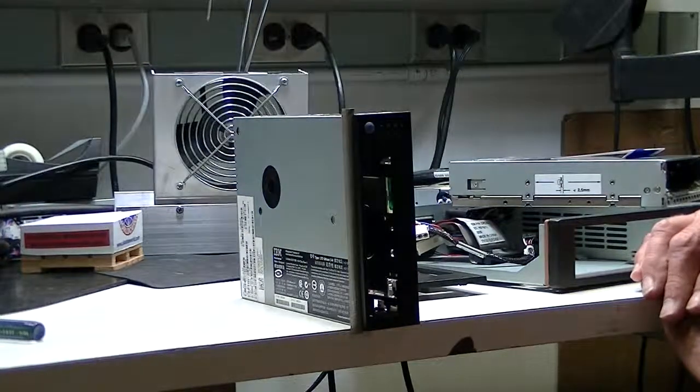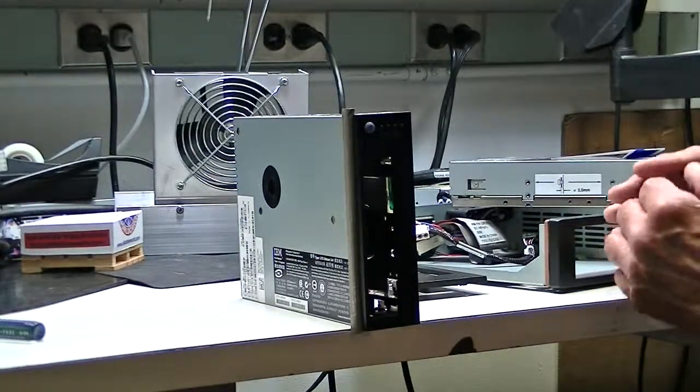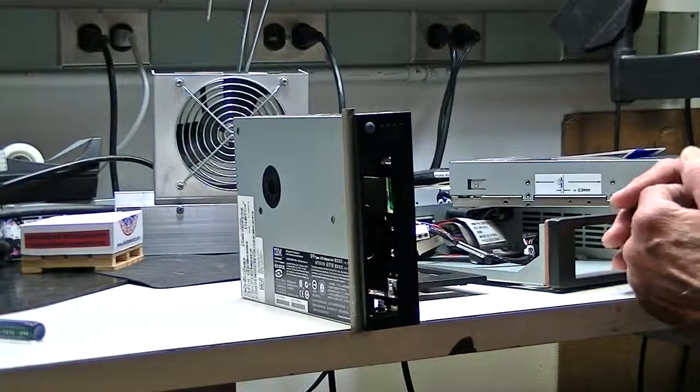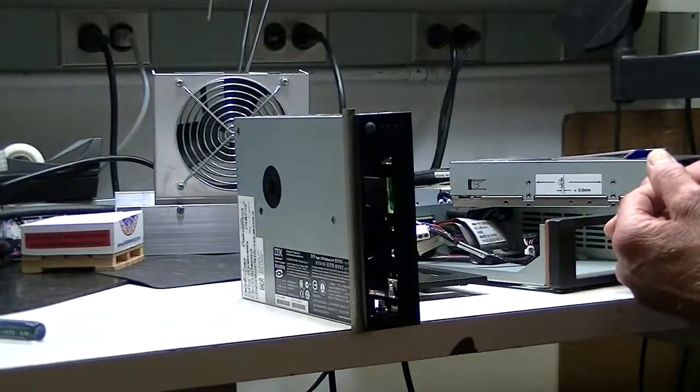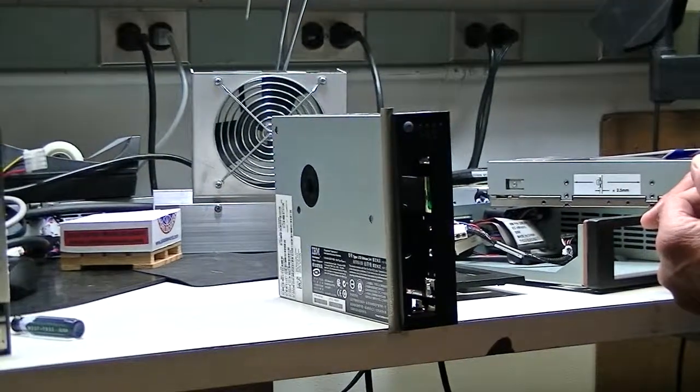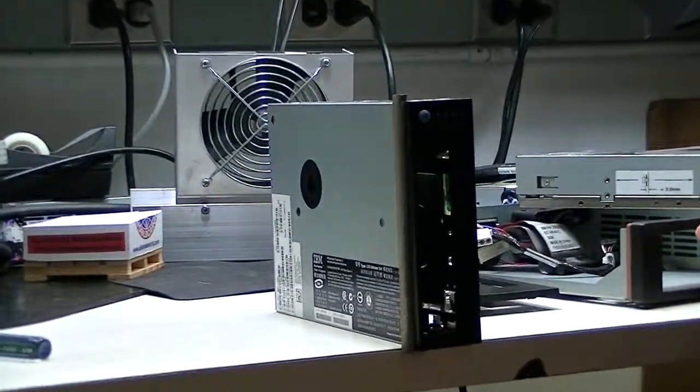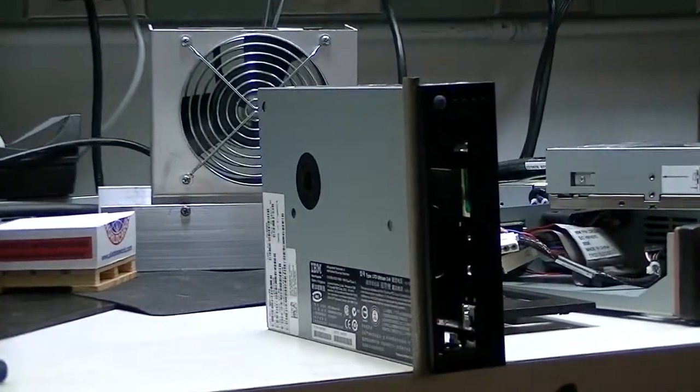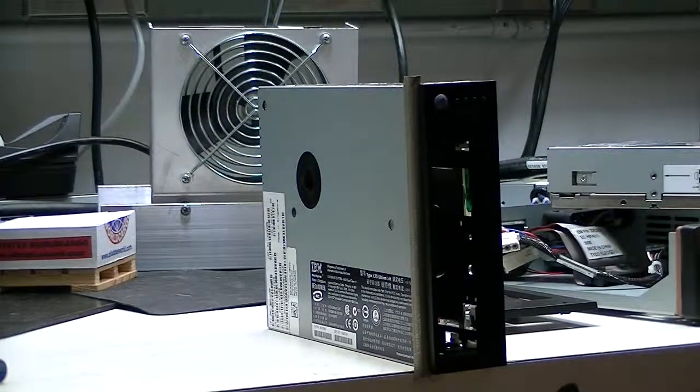Hi, what I'd like to do is demonstrate how to remove a bezel, sometimes called a face plate, from an IBM half-height LTO3 tape drive. This applies to a lot of other half-height drives as well. Some of it applies to a full-height drive as well.